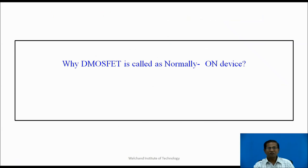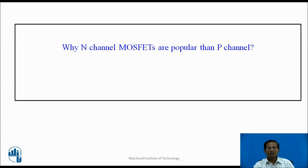Why is D MOSFET called a normally-on device? When VGS is zero, the output current is maximum — that's why the D MOSFET is called a normally-on device. Why are N-channel MOSFETs more popular than P-channel? In the N-channel MOSFET, majority charge carriers are electrons, while in P-channel they are holes. The mobility of electrons is 1300 cm² per volt-second, whereas the mobility of holes is 500 cm² per volt-second. Therefore, in the N-channel MOSFET, the current is twice that of P-channel, the packing density is very high, and N-channel MOSFETs are more compact and popular in commercial applications.